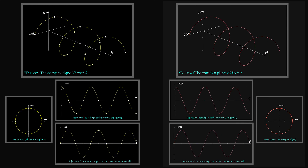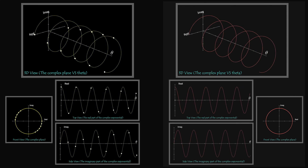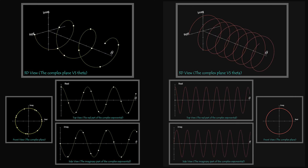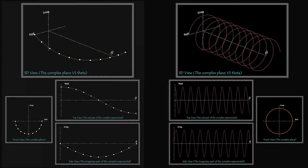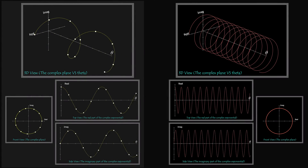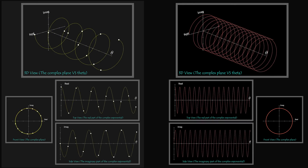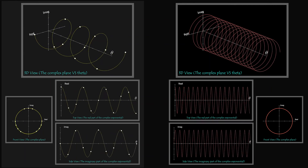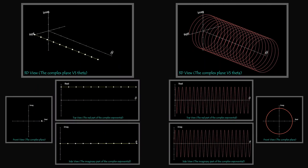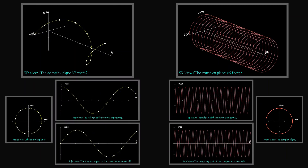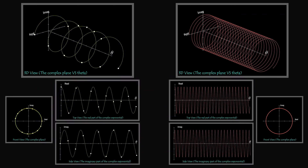In continuous time complex exponential, we can increase the frequency indefinitely and still get different signals. Whereas in discrete time complex exponential, if we keep increasing the frequency, we repeat the same signal every 2pi of omega. That's called frequency aliasing — a phenomenon related to discrete time signals.